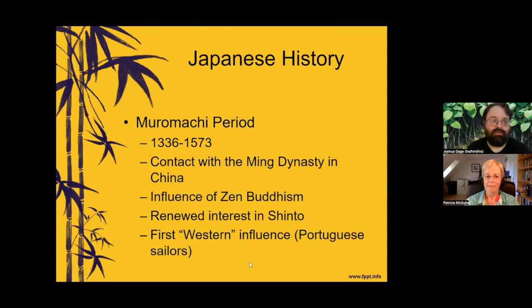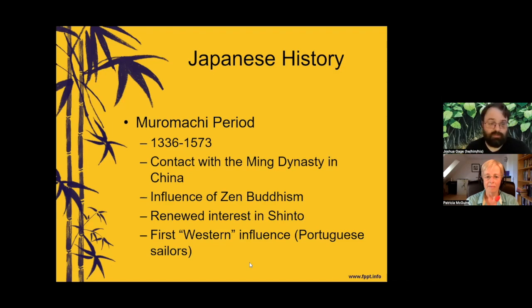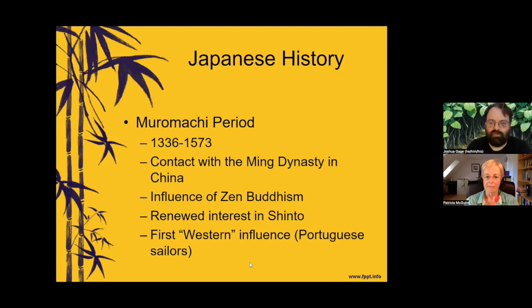The ensuing period of Ashikaga rule, 1336 to 1573 — so this is going to predate what we know of as hokku and haiku — was called the Muromachi, from the district of Kyoto in which the headquarters, the Hananogosho or Flower Palace, were located by the third Shogun Ashikaga Yoshimitsu in 1378. This is what I think Shirane is tapping into when he's talking about the horizontal and the vertical axis.